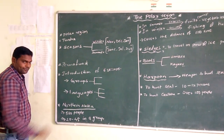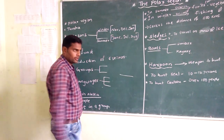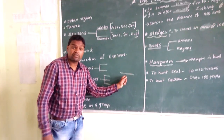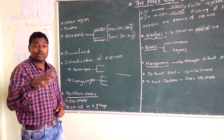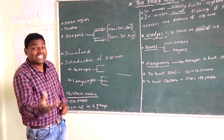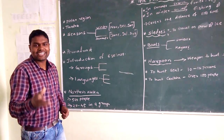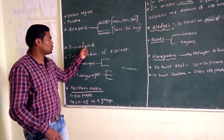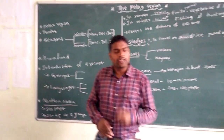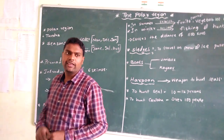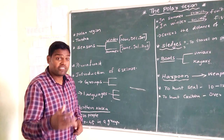We discussed about permafrost. What is meant by permafrost? The upper most layer of the soil, because of continuous snowfall or because of extremely cool conditions, becomes a rock-like structure. So that is what we call permafrost — the topmost part of the soil becoming hard, rock-like structure.